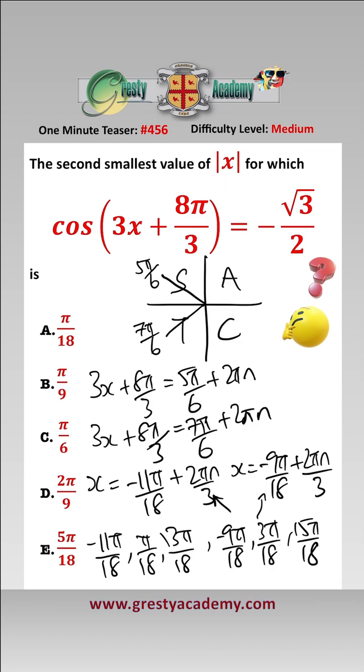And as we've left them all over 18, it's easy to compare. We want the second smallest value of absolute x. Well, the smallest is pi over 18, the second smallest is 3 pi over 18, which is pi over 6, which is answer C.